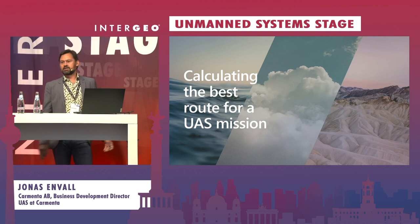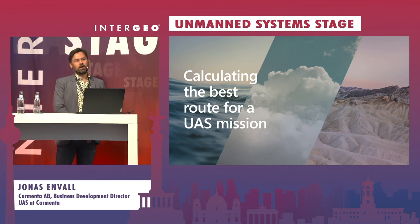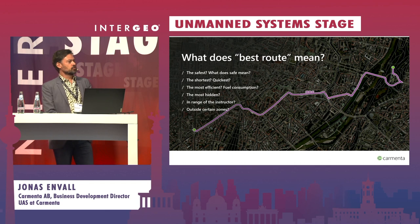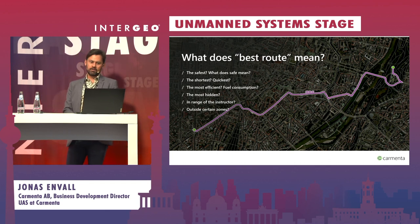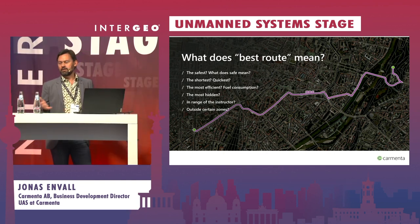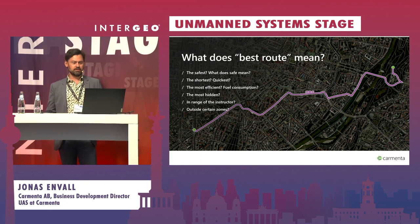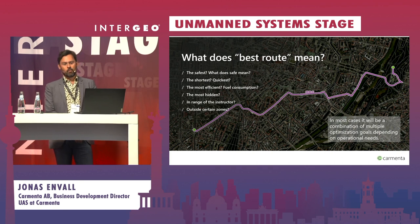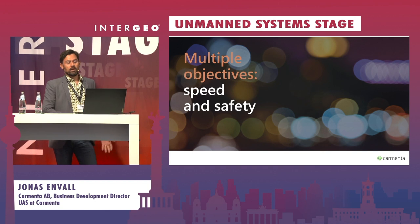Next we go into the second use case: calculating the best route for your mission. We'll be looking at both rural and urban examples. In both cases we want to calculate the best route — but what does 'best' mean? Is it the safest, the shortest, the quickest, the most fuel-efficient, the most hidden from radar stations, or outside a certain zone? In most cases it will be a combination of multiple optimization goals depending on operational needs. In our example, we're going to focus on two optimization goals: speed and safety.